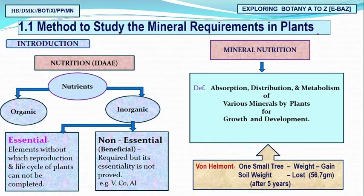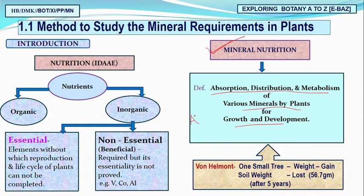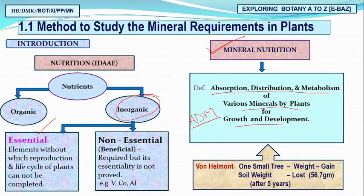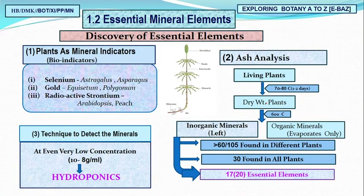In the first lecture, we defined mineral nutrition as the absorption, distribution, and metabolism (ADM) of various minerals by plants for growth and development. Minerals are inorganic nutrients. They are called essential because they are required for the reproduction and life cycle of the plant — without them, the life cycle cannot be completed.